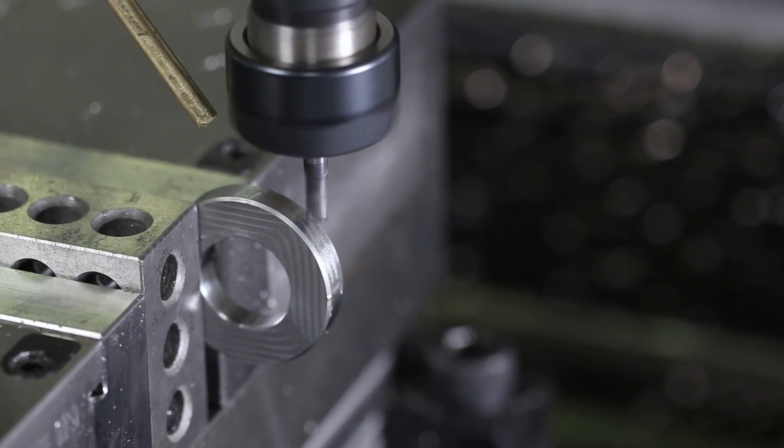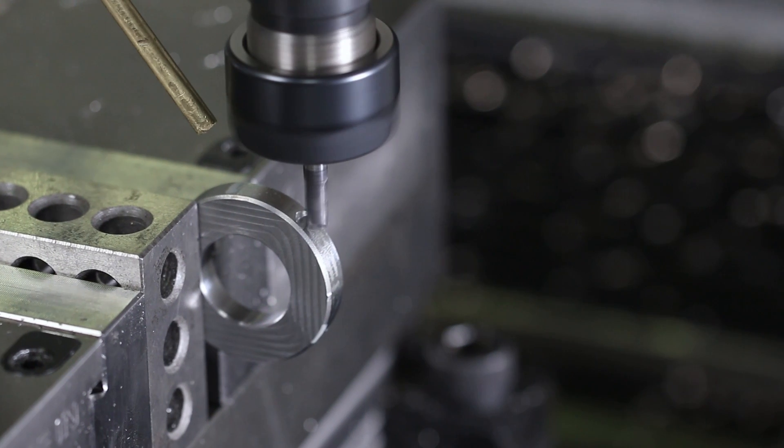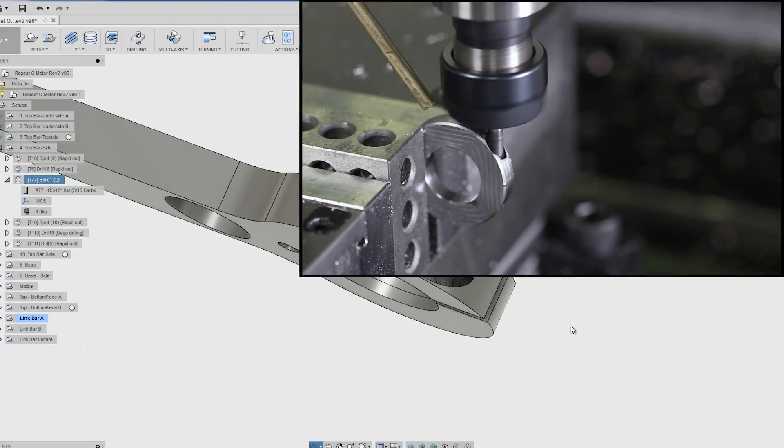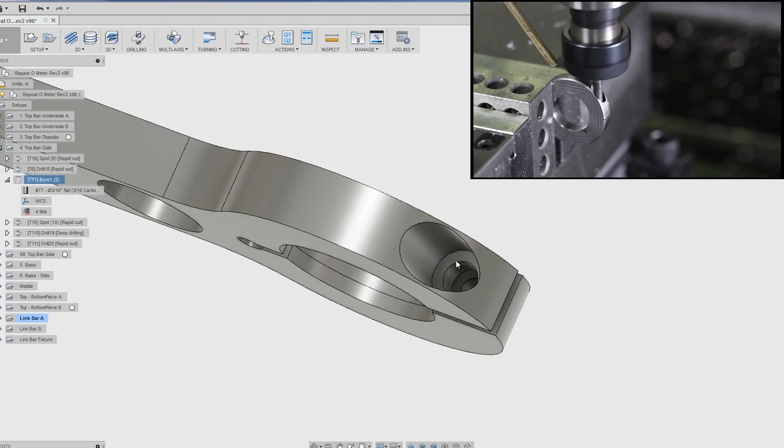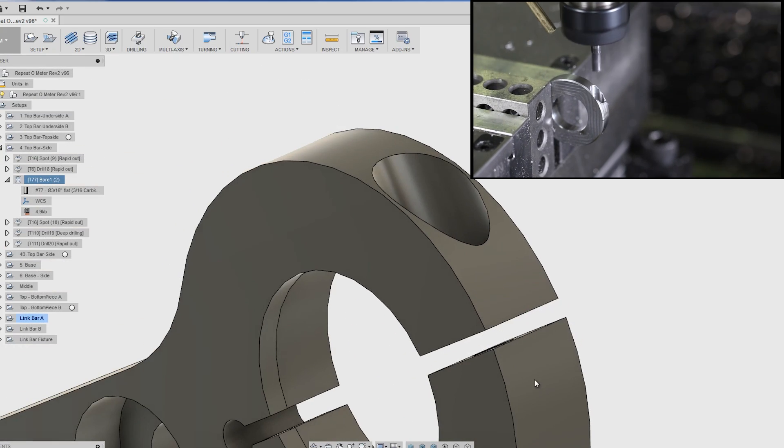A little bit of chatter there. More importantly, we're using the same tool to open up the pocket. I wouldn't call this complex, but there's a lot going on here. We've got the clearance area for the socket head cap screw head, a clearance hole here, and then the tapped hole on the underside.